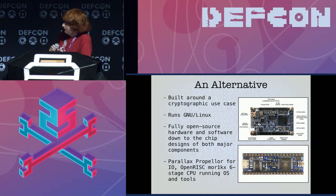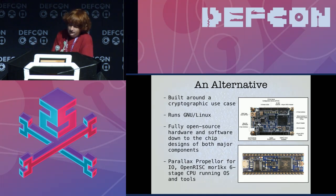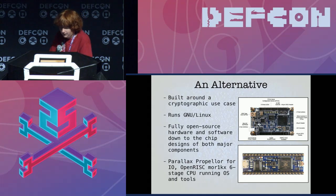We took the OpenRISC CPU standard and built a system around it. It's got JTAG, it's got UART, it's got an SDRAM bus — it's a fully functional processor. We've got a block diagram here to explain this.